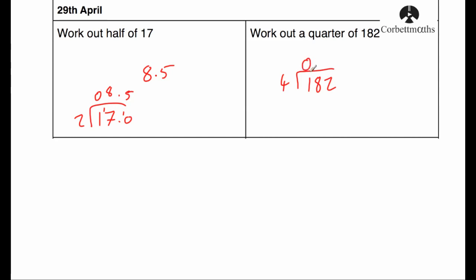4 into 1 doesn't go, so 0, remainder 1. 4 into 18 goes 4 times, that's 16, remainder 2. 4 into 22 goes 5 times, remainder 2. So put a decimal point and a 0, carry on the bus stop, remainder 2, and 4 into 20 goes 5 times, so the answer would be 45.5.